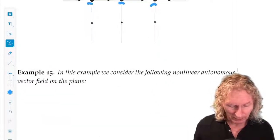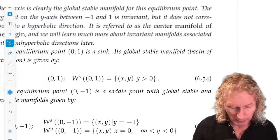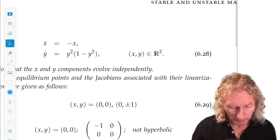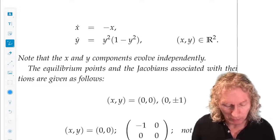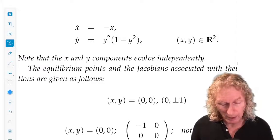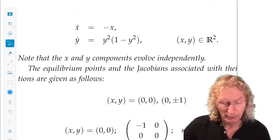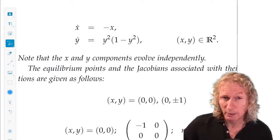Okay, let's consider another example which is a little bit more involved, but not much. x dot equals minus x. It's decoupled also. y dot equals y squared times the quantity one minus y squared. So x equals zero implies x dot equals zero.